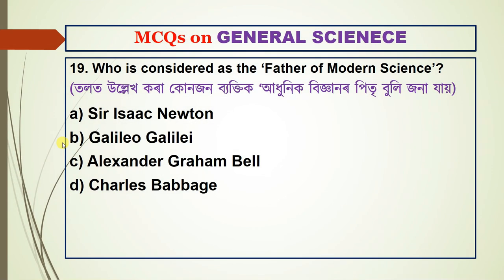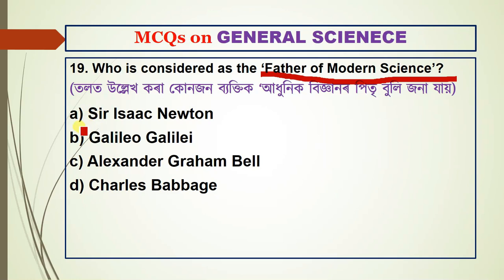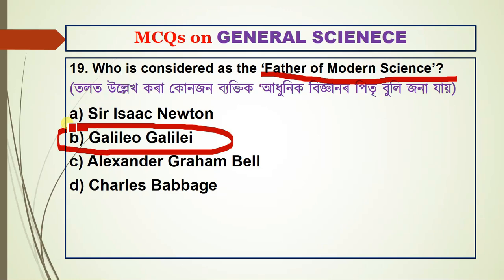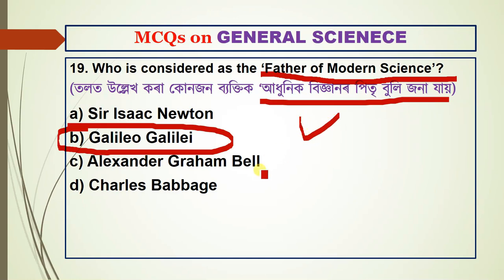Question number nineteen: who is considered the father of modern science? The options include Isaac Newton, Galileo Galilei, and Alexander Graham Bell. The answer is Galileo Galilei. Also, who is the father of the computer?